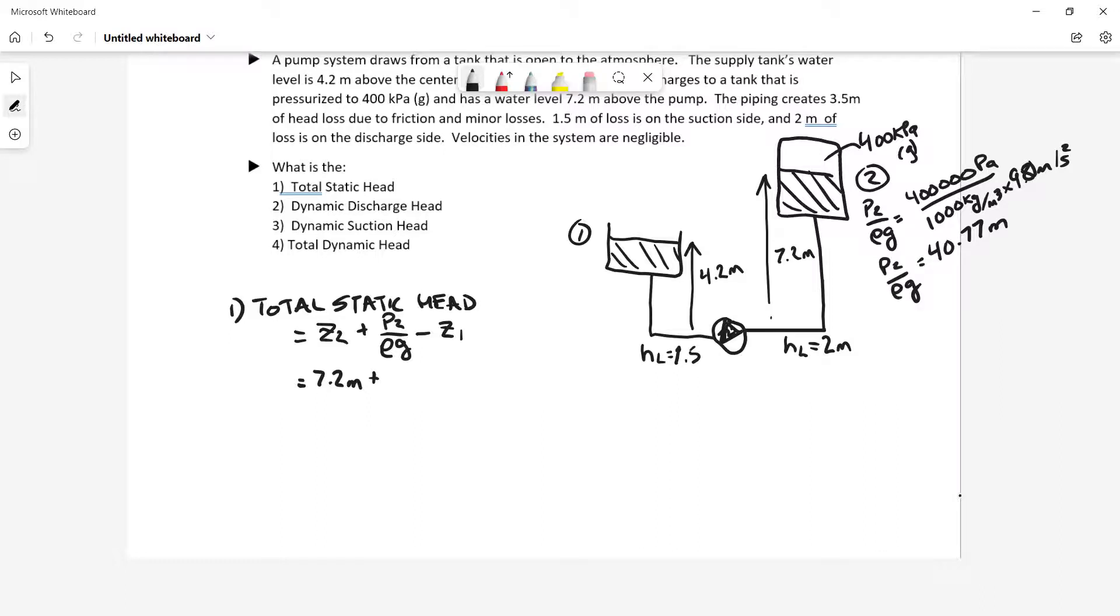And that ends up when I calculate that out to 40.77 meters is my pressure 2 over rho G, my pressure head in that supply tank, or sorry, the discharge tank. So 7.2 plus 40.77 meters minus 4.2 meters. And so this system has a static head of 43.774 meters.